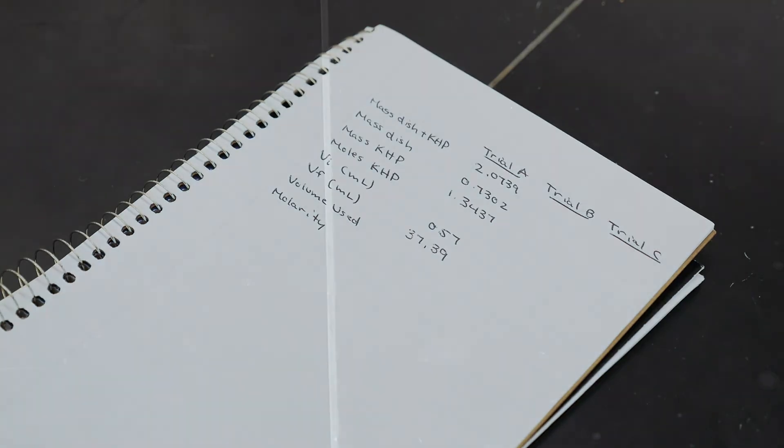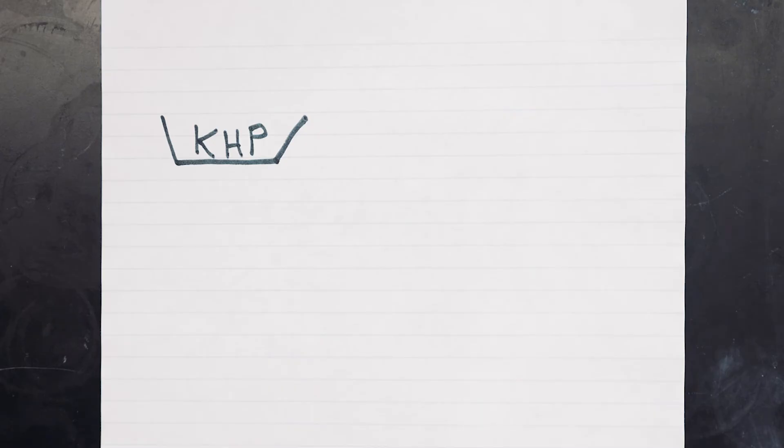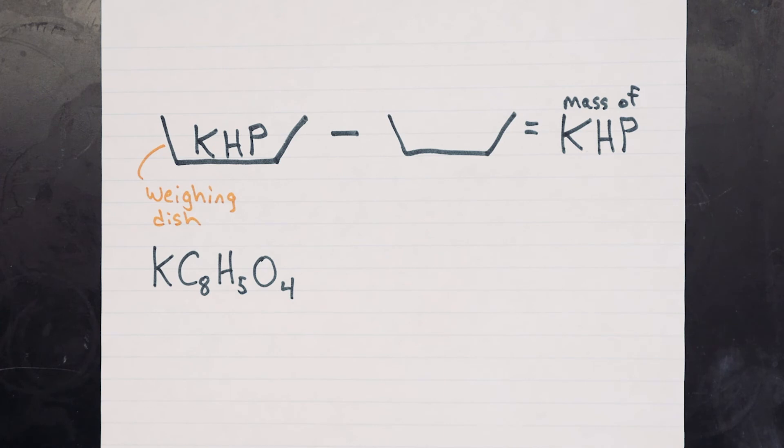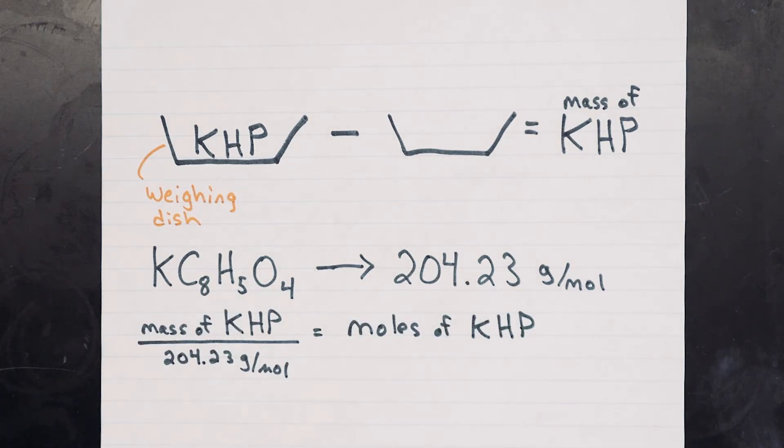How do we go from the titration volumes we've recorded to actual concentrations of sodium hydroxide? Our accurate measurement of the KHP mass started when we weighed it while it was in the weigh dish. We also have a mass of the weigh dish without the KHP, so the difference between those two numbers will be the exact mass of KHP that ended up in our standard solution. KHP is the formula K C8 H5 O4, so we can calculate the formula weight and use it to determine how many moles of KHP we had since we know the mass accurately.